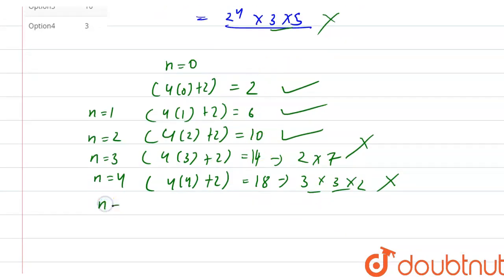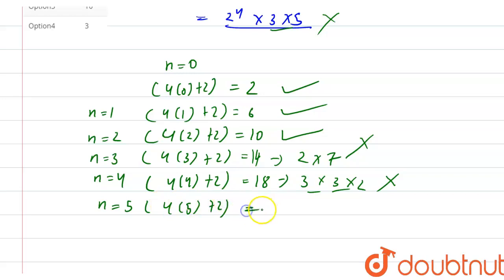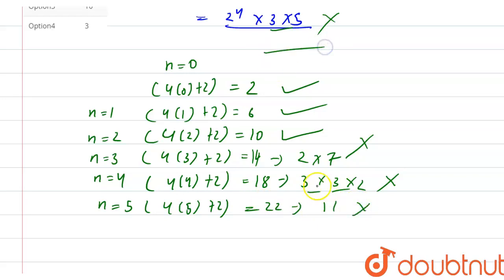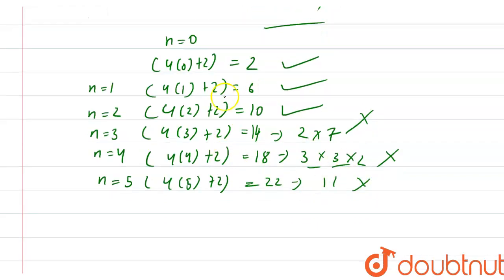Now n equal to 5 gives 4(5) plus 2 equal to 22. This would require 11 as a factor, but we don't have 11 in the prime factorization of 240. So 22 is not a factor in the form 4n plus 2.